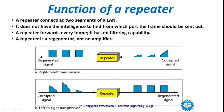How does the repeater function? A repeater connects two segments in a LAN. It does not have the intelligence to find from which port the frame should be sent out. The repeater forwards every frame — it has no filtering capability and it is a regenerator, not an amplifier. When there is a signal, it is strong initially, then attenuates, and at some point reaches the repeater. The corrupted signal is then regenerated correctly. In the case of left-to-right transmission, this is the functionality of a repeater.